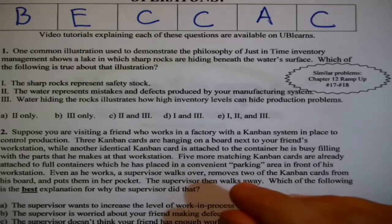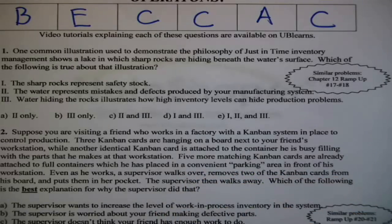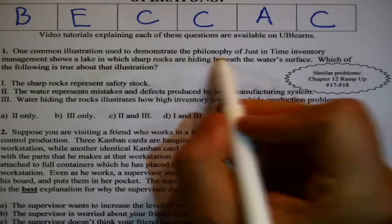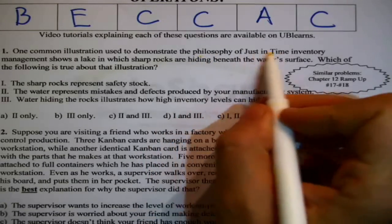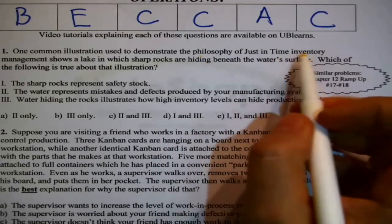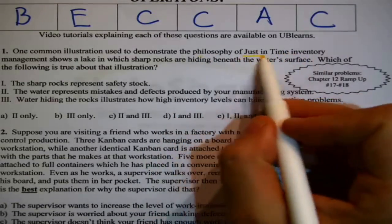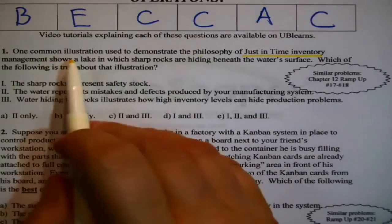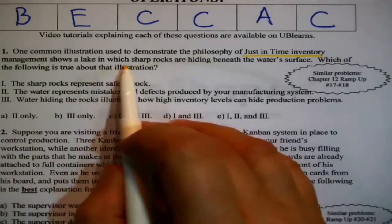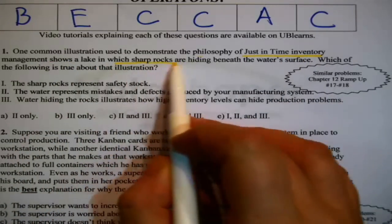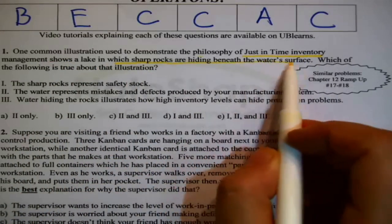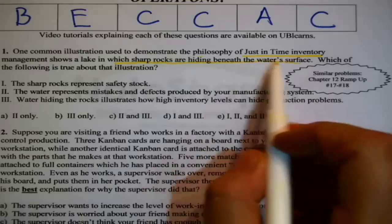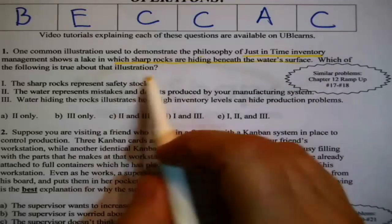One common illustration used to demonstrate the philosophy of just-in-time inventory management — another name for Lean — shows a lake with sharp rocks hiding beneath the water surface. Which of the following is true?